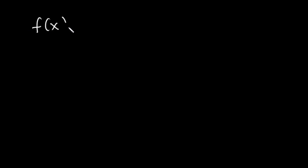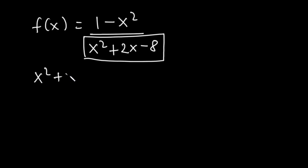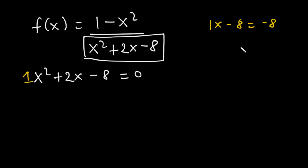Now let's find the domain of f of x equals 1 minus x squared divided by x squared plus 2x minus 8. Because we have a rational function, we equate the denominator to zero: x squared plus 2x minus 8 equals zero. To factorize, the coefficient of x squared is 1 and the constant is negative 8, so 1 times negative 8 equals negative 8. We need factors of negative 8 that add up to 2.